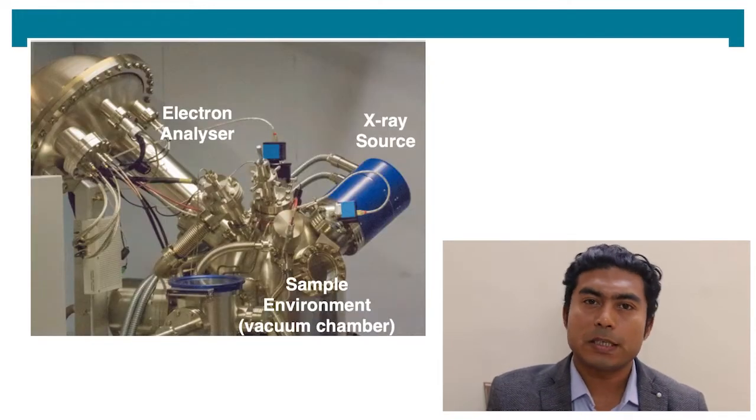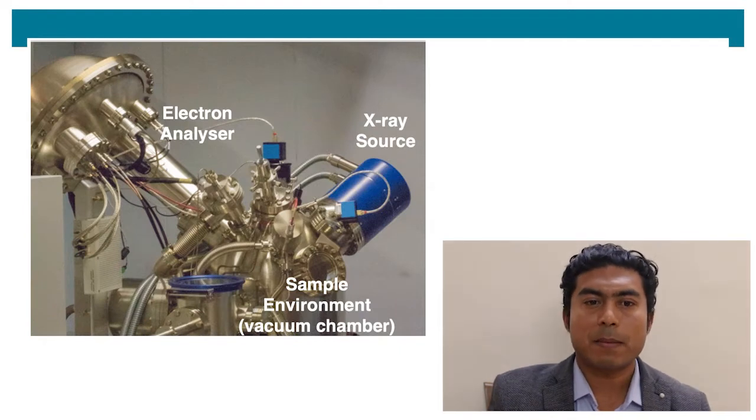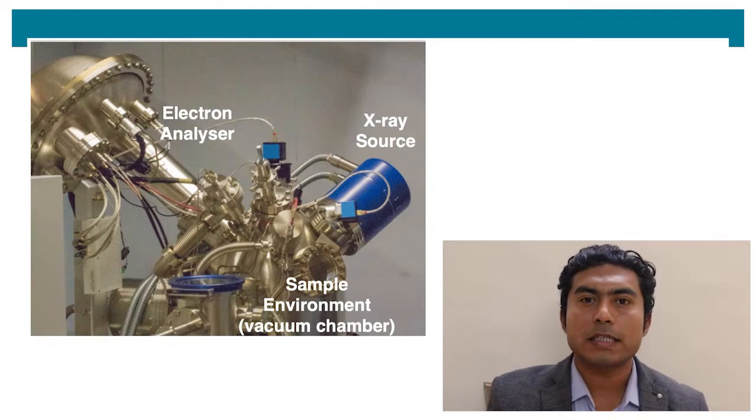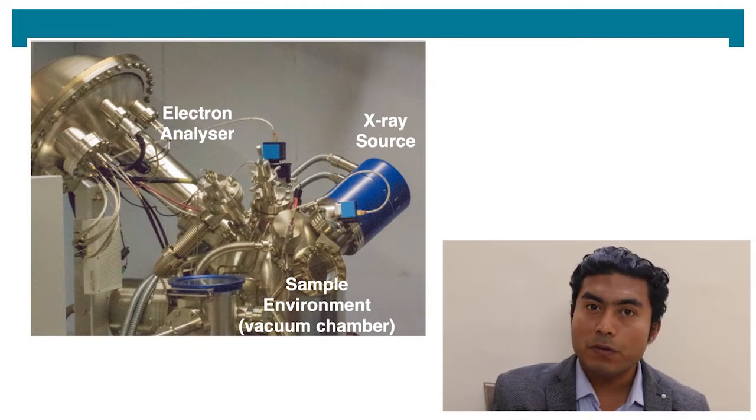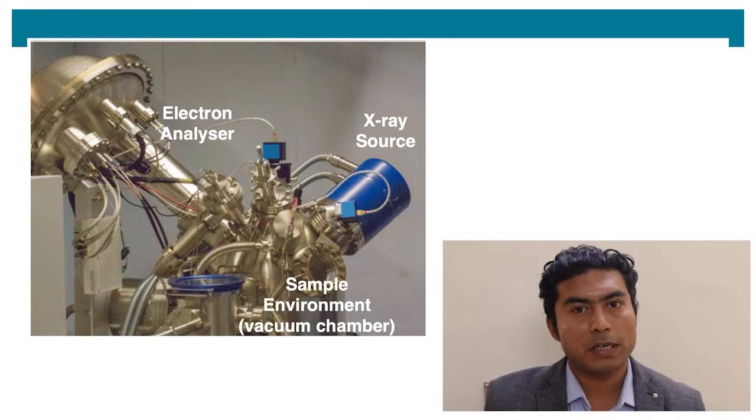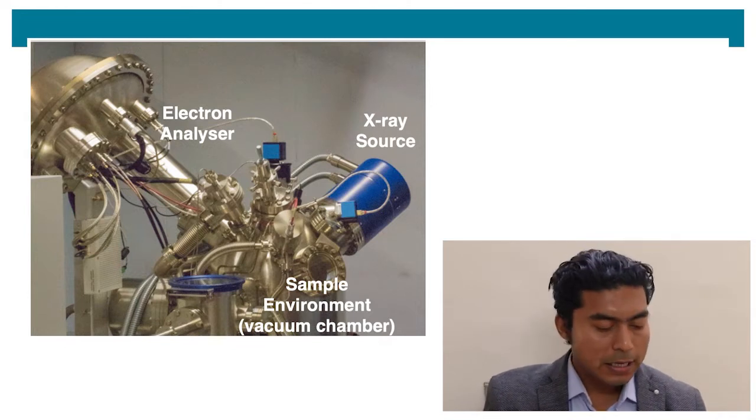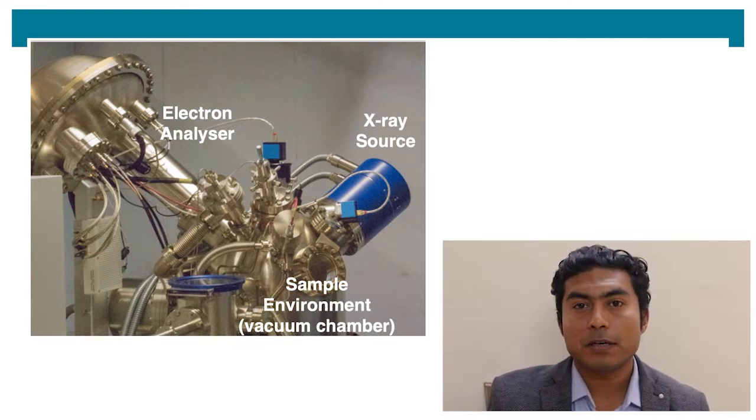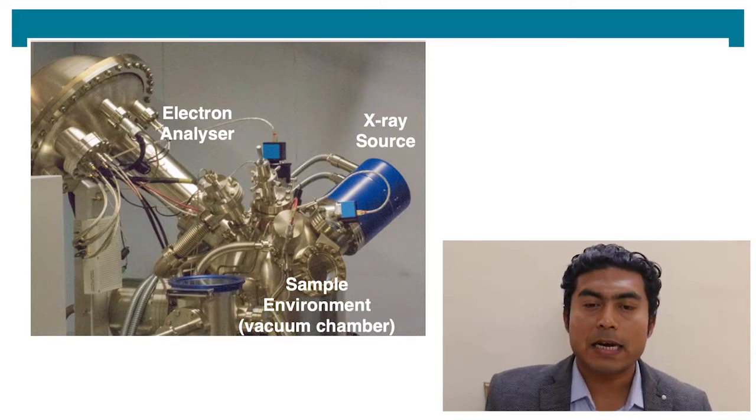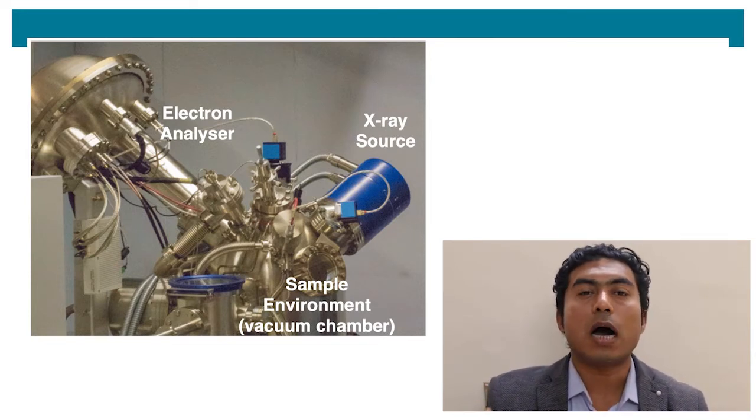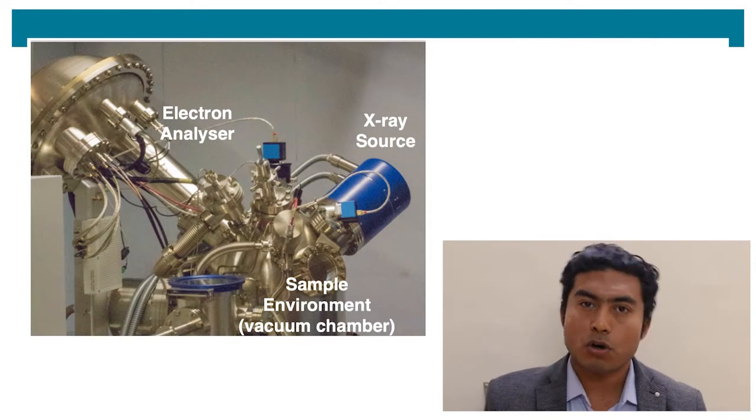This picture shows a typical XPS instrument. The main components are sources for X-ray for XPS, source of UV for UV photoelectron spectrometer, and an electron analyzer. Generally, they look like a hemisphere and a stainless steel made ultra-high vacuum chamber to house sample and many other components.